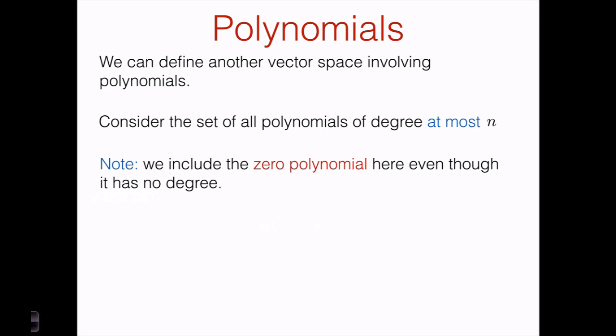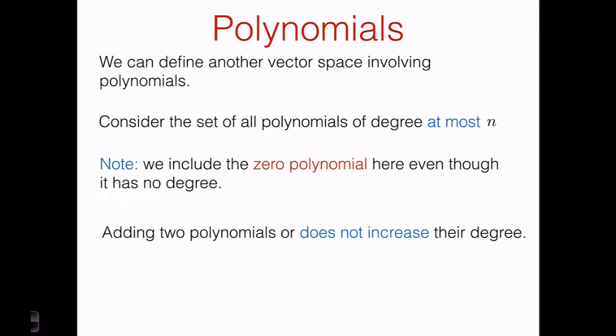Let's consider another vector space involving polynomials: the set of all polynomials of degree at most n. There's a technicality here — we need to include the zero polynomial, even though it has no degree. So when I talk about the set of all polynomials of degree at most n, I always mean to include the zero polynomial as well. We need the zero polynomial to be in there, otherwise we don't have a zero element.